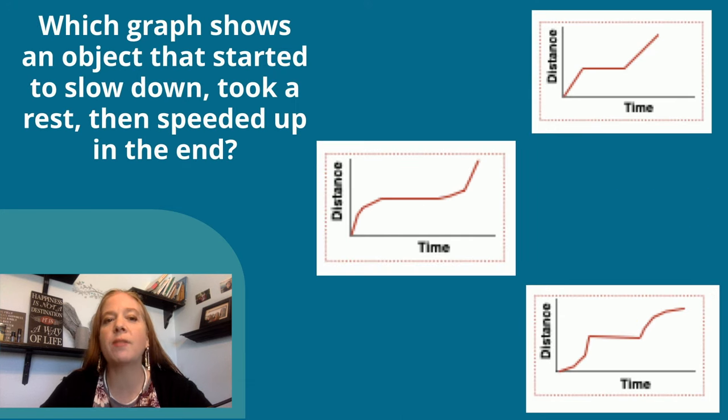Now which graph shows an object that started to slow down, took a rest, and then sped up in the end?